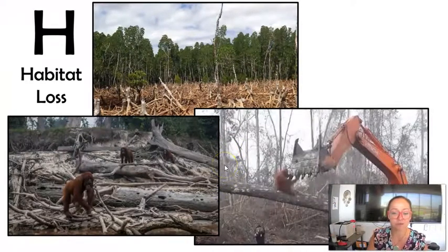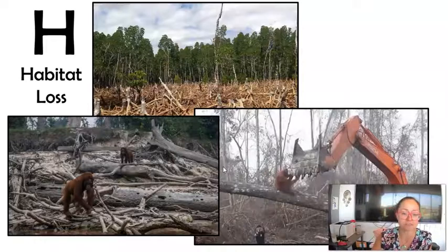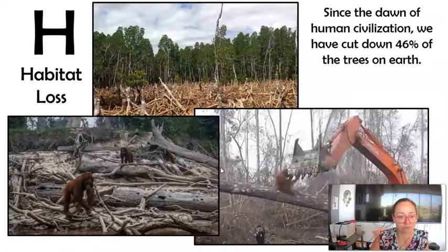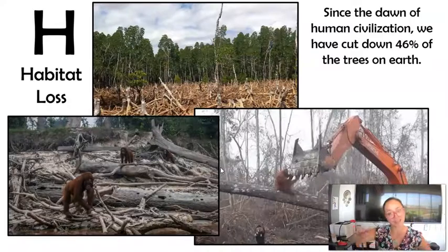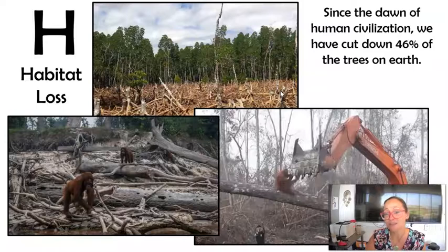This leads to habitat loss for species. In the Indonesian rainforest, one major reason for habitat loss is converting the forest into palm oil fields. When we talk about our forests on Earth, we've cut down nearly half of the trees. As human civilization has grown, forest communities have declined — only about two to five percent of the original pristine forests in the United States remain untouched by humans.